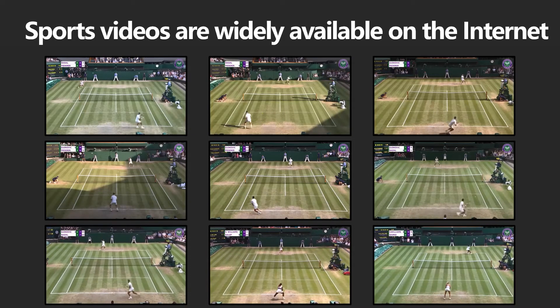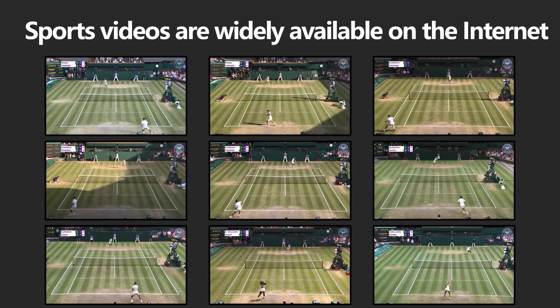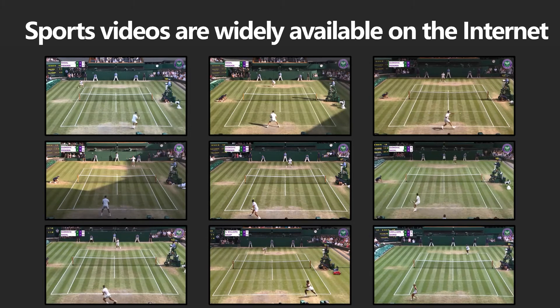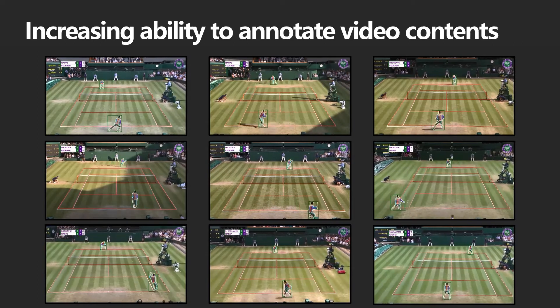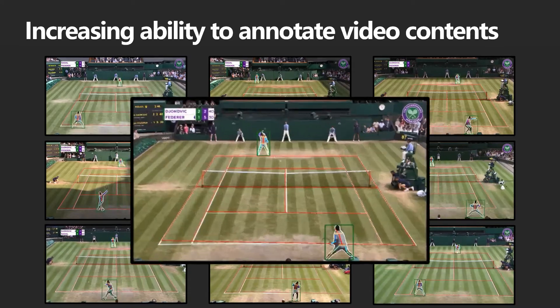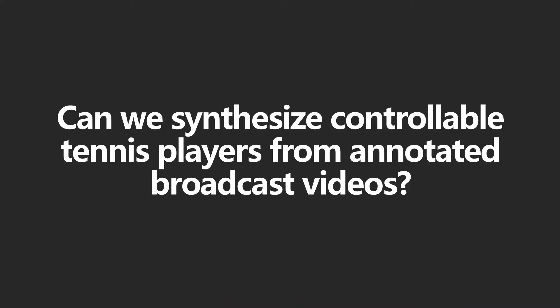These days, videos of professional sporting events, like these videos of Wimbledon, are widely available on the internet. It is also possible to annotate these videos with off-the-shelf computer vision models such as human segmentation, pose keypoints, and court lines. In this paper, we are interested in the question: can we take all these videos, along with machine and human-generated annotations, and use them to synthesize interactively controllable video sprites of star tennis players?